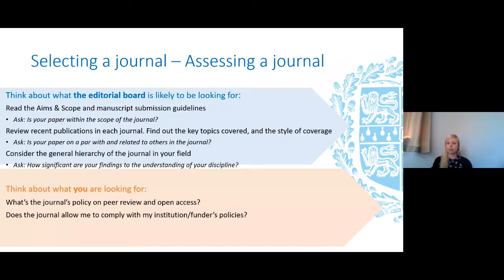Once you have shortlisted some journals, you can refine and make assessments in certain ways. First, it is important to say that impact factor is only one factor amongst many when selecting a journal. While it is probably the most recognised measure of journal impact globally, there are many other things you should be considering. You need to make sure it is the right fit for your article by thinking about what the editor and reviewer are looking for. We strongly encourage authors to read the manuscript submission guidelines associated with their chosen journal as early as possible during the manuscript preparation process, to ensure full understanding of the journal's audience and scope.